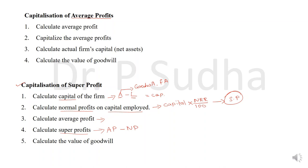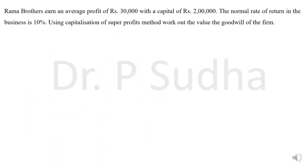Then you have to calculate goodwill. How to calculate goodwill? It is super profit into 100 divided by normal rate of return. This capitalization of super profit is very similar to super profit method. Now let's see how to work out a problem.